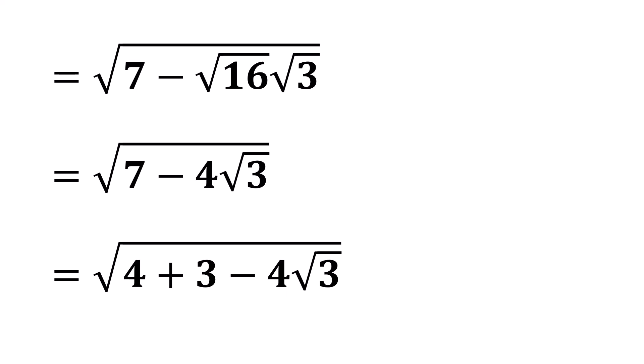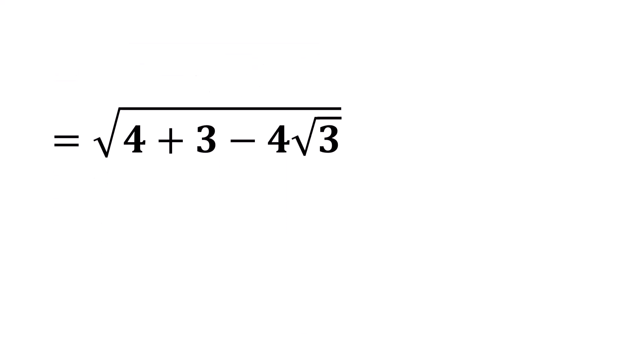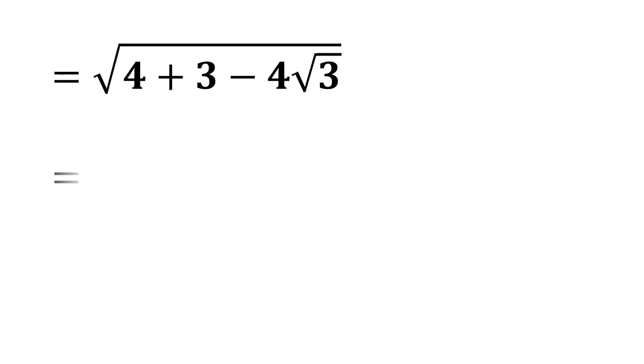Now, by rearranging the terms inside, we can write it as the square root of 4 minus 4 times the square root of 3 plus 3.